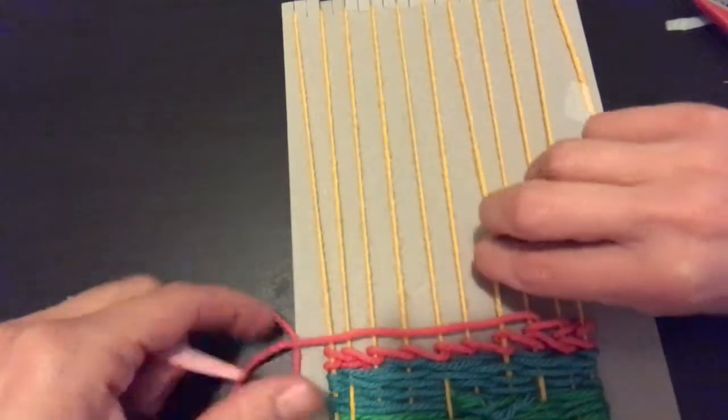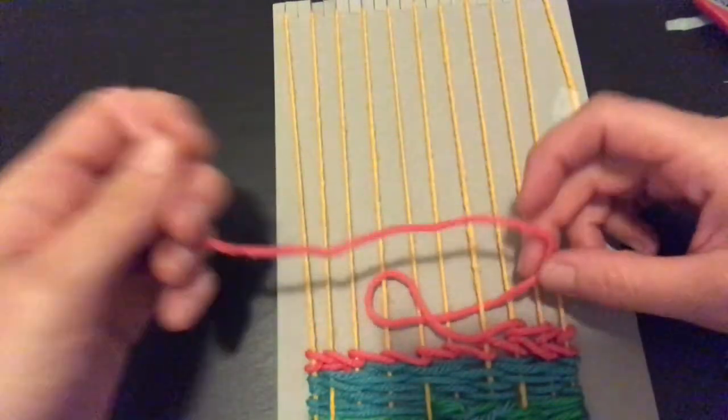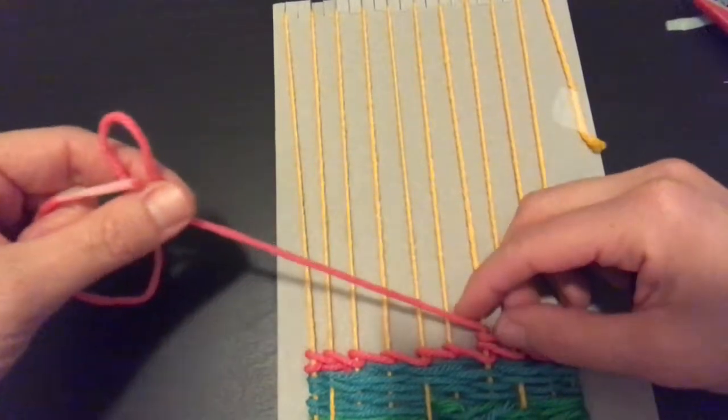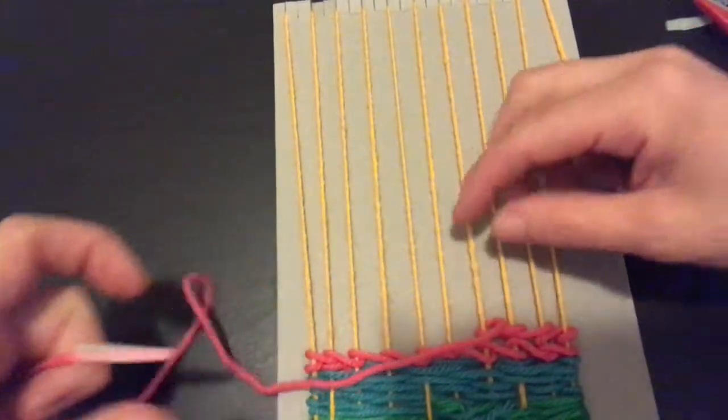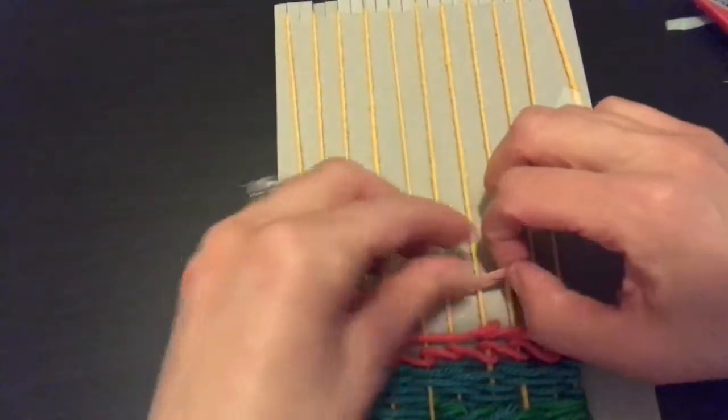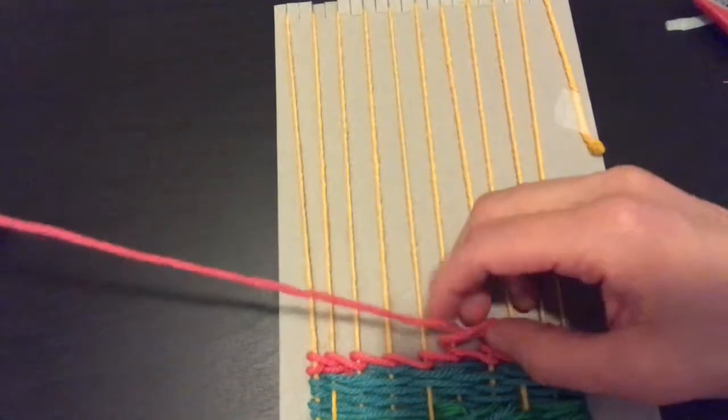Cross over the next one, go behind it, slowly and gently pull it through and around. So you're making a loop around each one. Cross over, go behind, pull, and it goes around.